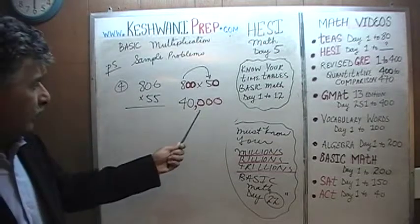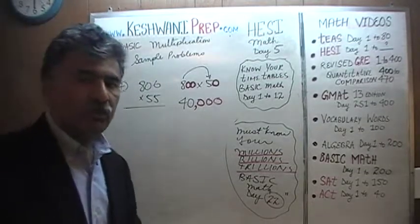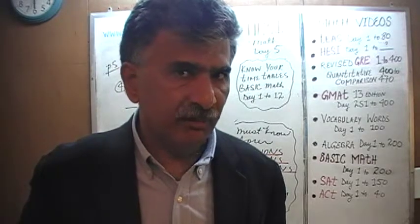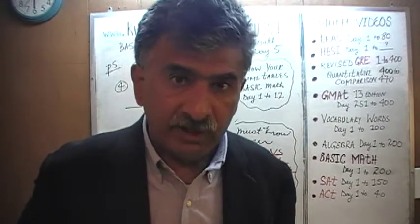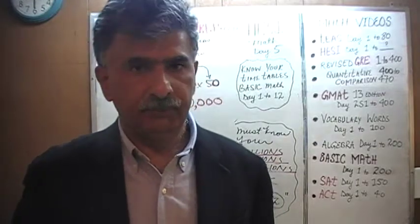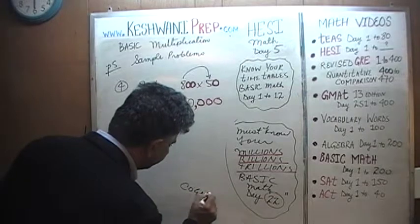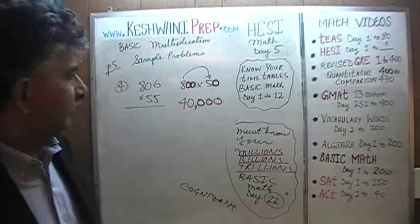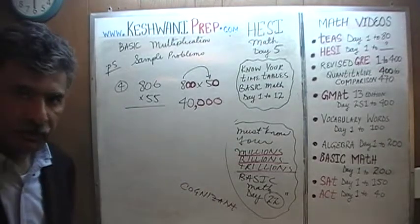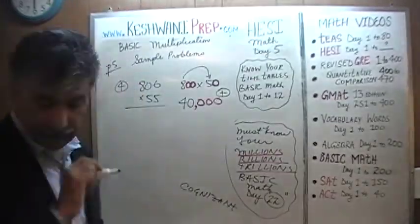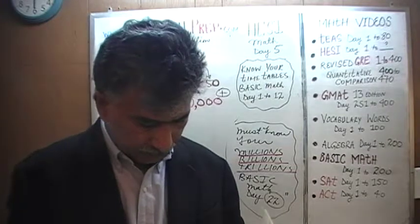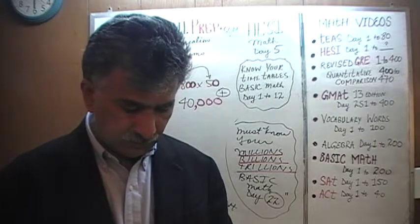We must ask: is that an overestimation or underestimation? It is not only fine to estimate on the exam — it is a must, in order to save time. But at all times you must be fully cognizant whether you are underestimating or overestimating. We had 806 and pretended it was 800; we had 55 and pretended it was 50. So clearly this is an underestimation.